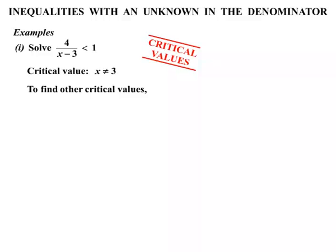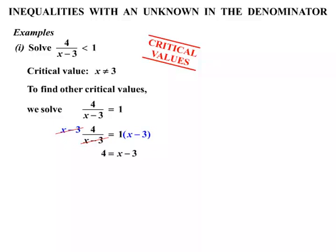To find other critical values we need to solve 4 over x minus 3 equals 1 — we've just changed the less than sign to an equals sign. Let's get rid of the denominator by multiplying both sides by x minus 3. They cancel, leaving 4 equals x minus 3. Adding 3 to both sides we get x equals 7.